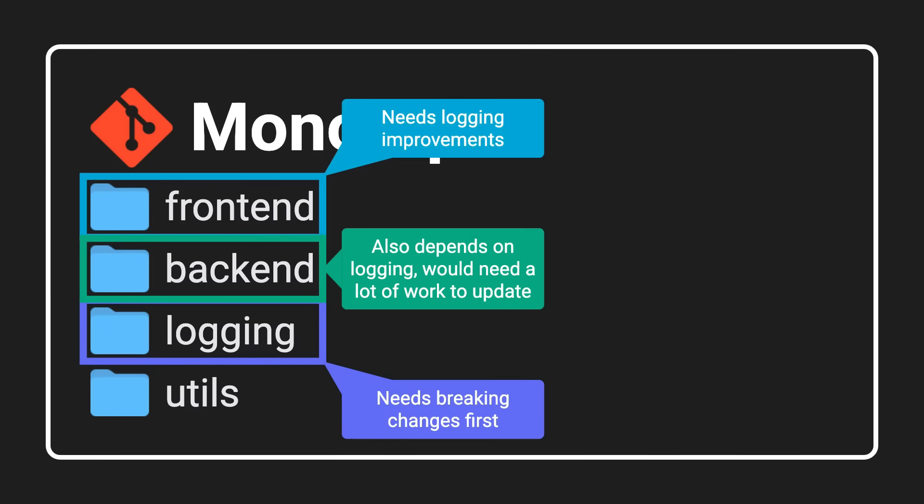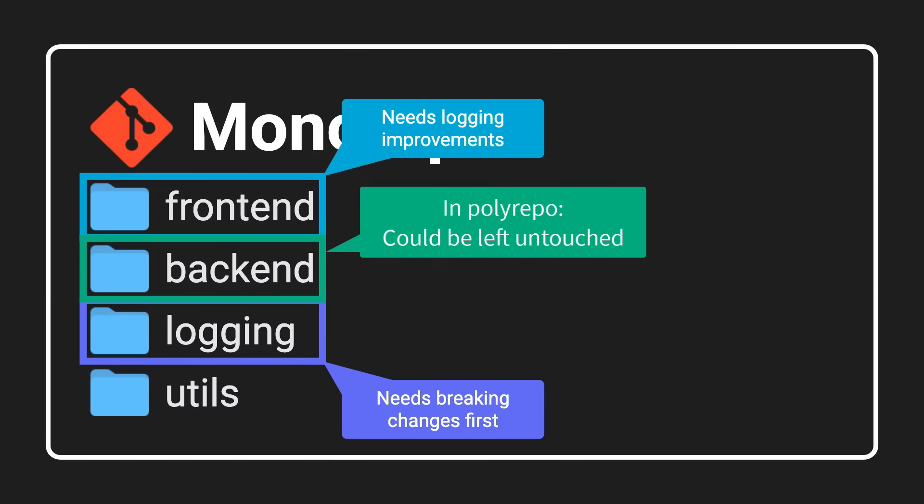Depending on the state of your project, this might not always be feasible. If adding this feature to the frontend is urgent, you might not have the time to do a major refactor in the backend just to make it work with the updated library, especially if you don't need that new feature in the backend right away. In a polyrepo setup, you could just leave the backend untouched. But in a monorepo, you're forced to upgrade all consumers immediately.